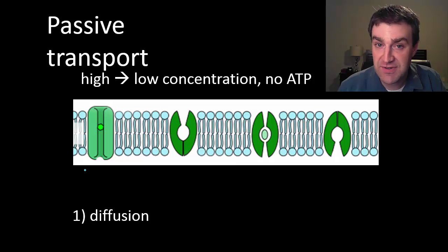Our first type of passive transport will be just diffusion or sometimes simple diffusion. That's just any time a particle can move from high to low concentration just by going through the phospholipid bilayer itself.